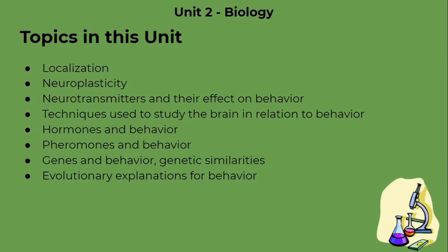We're also going to be going over the techniques used to study the brain, as well as hormones and pheromones in behavior. We'll also cover genetics and the role it plays in behavior, discussing heritability, monozygotic and dizygotic twins, twin studies, adoption studies, and more. And lastly, we'll be going over the evolutionary perspective, which will show us how certain emotions and tastes are evolutionarily explained.